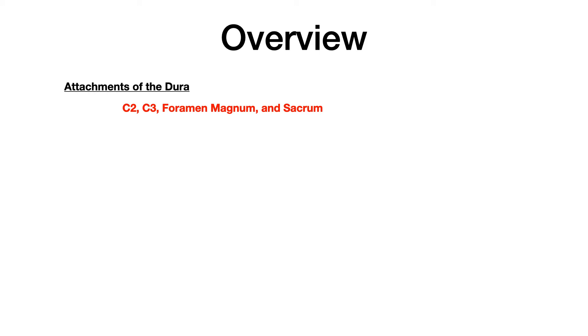We need to begin by talking about the attachments of the dura. Since the dura connects the cranium and the sacrum, its attachments are very high yield for COMLEX. The attachments you need to memorize are C2, C3, the foramen magnum, and the sacrum — showing connections at both the cranium and the sacrum. That's very, very high yield.